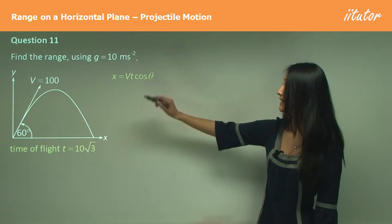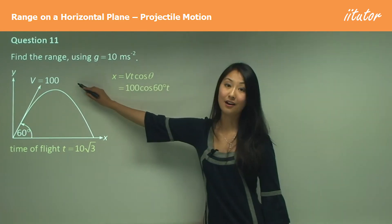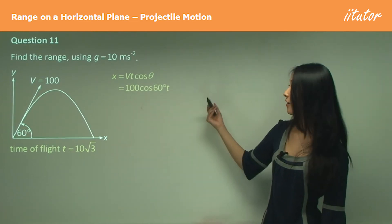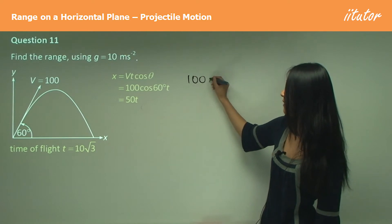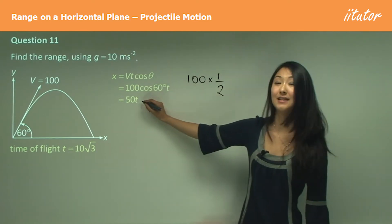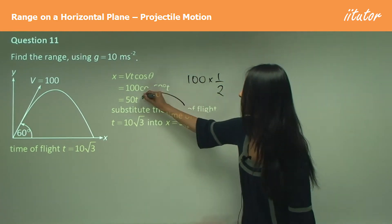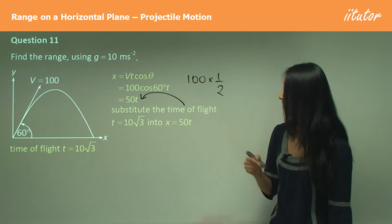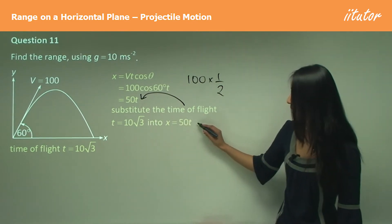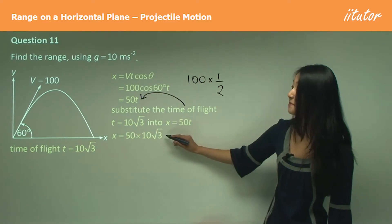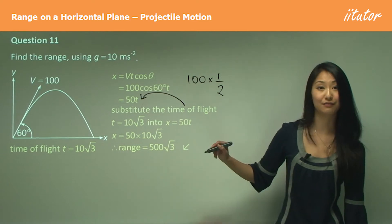Horizontal displacement is VT cos theta. V is 100. Theta is 60 degrees. Now cos 60 degrees just equals to half, so we have a hundred times half that gives us 50T. And now all we need to do is substitute the time of flight into that T. The time of flight was 10 square root 3, so we get 50 times 10 square root 3, which equals to 500 square root 3.